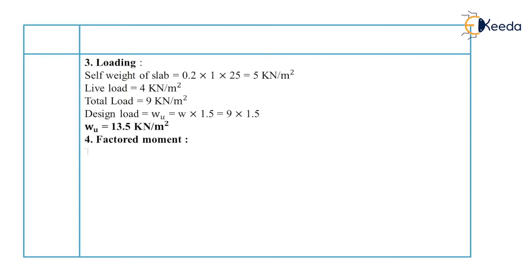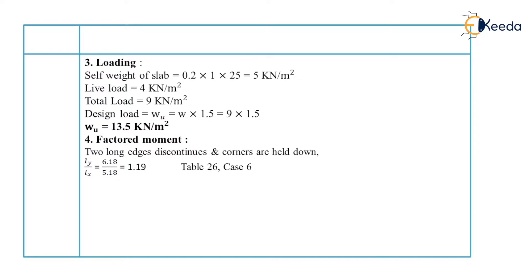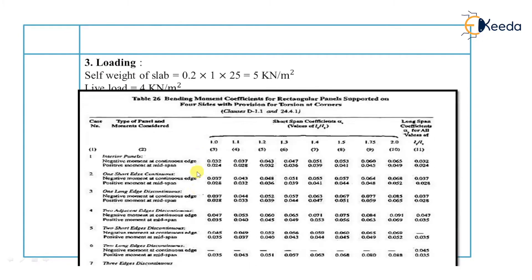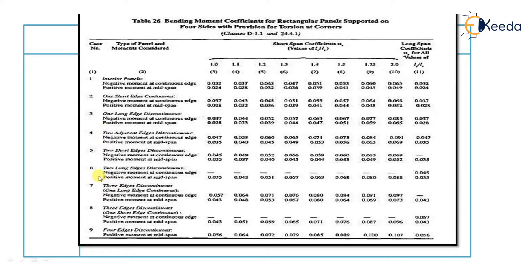In the problem statement, two long edges are discontinuous and corners are held down. To find the bending moment coefficients, we refer to Table 26 of IS456. First, we calculate the ratio LY by LX, which equals 1.19. Case number 6 from that table matches our criteria — two long edges are discontinuous — so for LY/LX equal to 1.19, we interpolate between the 1.1 and 1.2 values.